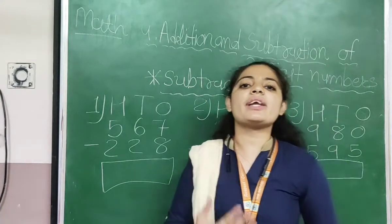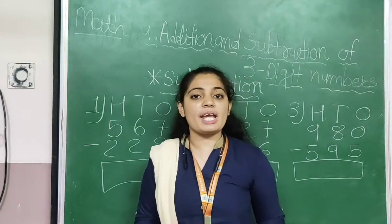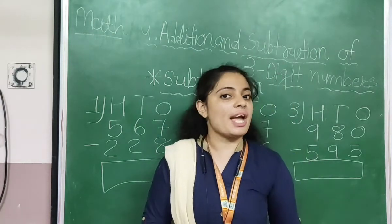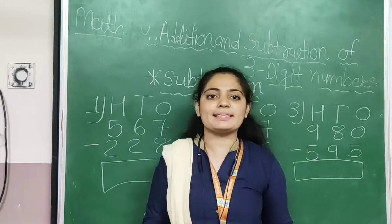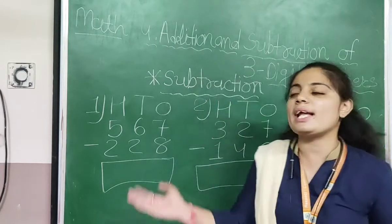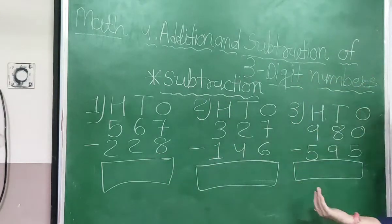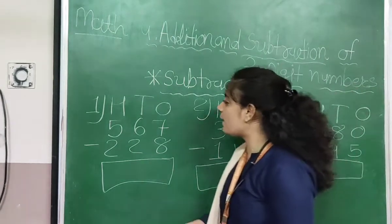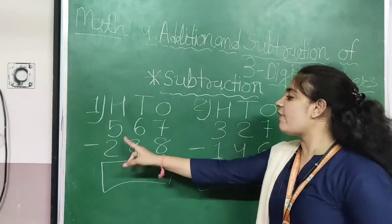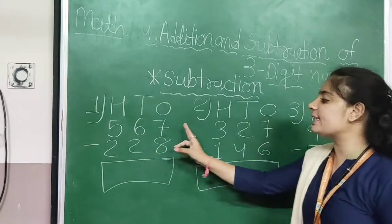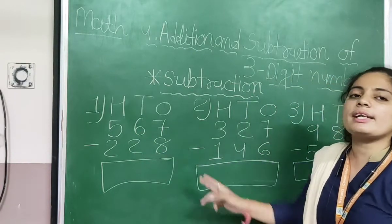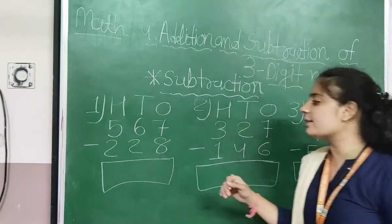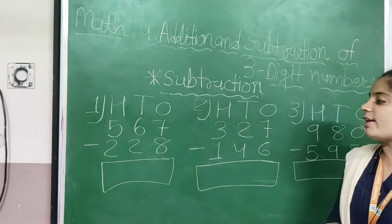Subtraction sums with regrouping — you can also call them carry sums. Subtraction carry sums, subtraction regrouping sums. There are 3 examples of regrouping and carry sums. So first: 567 minus 228.